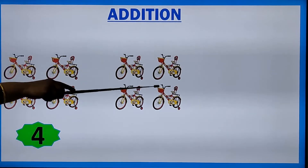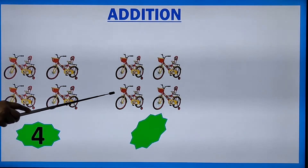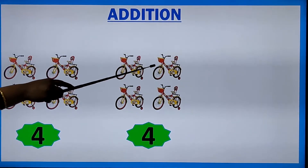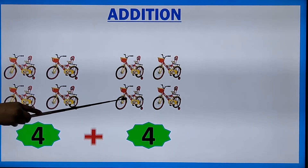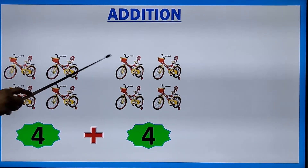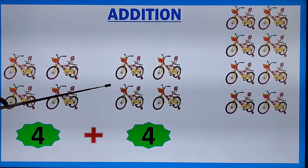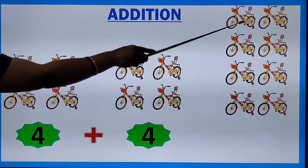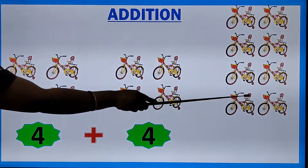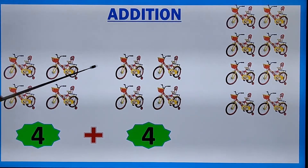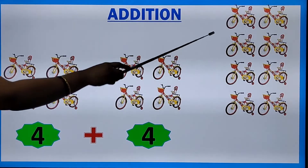How many bicycles are there here? One, two, three, four. Now we are adding four more bicycles with that — one, two, three, four. So four plus four bicycles. Let's count: one, two, three, four, five, six, seven, eight. Four plus four bicycles makes eight bicycles.